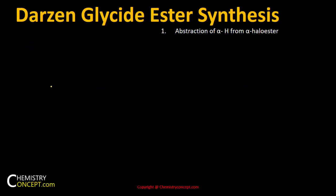Let's have a look at the mechanism of this reaction. There are three steps. The first step is abstraction of alpha hydrogen from the alpha halo ester — that is Cl attached to CH2-C(=O)-O-C2H5. When treated with a strong base like NaNH2, the alpha hydrogen is abstracted to form a carbanion.